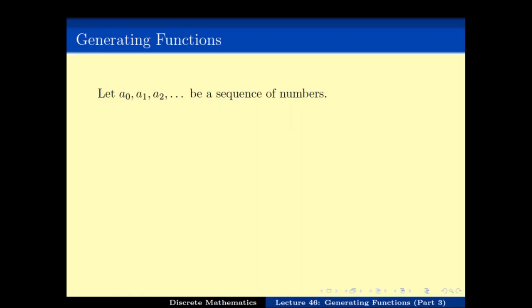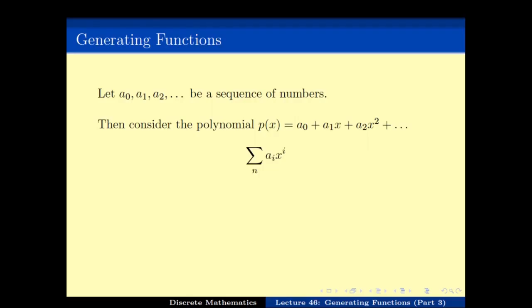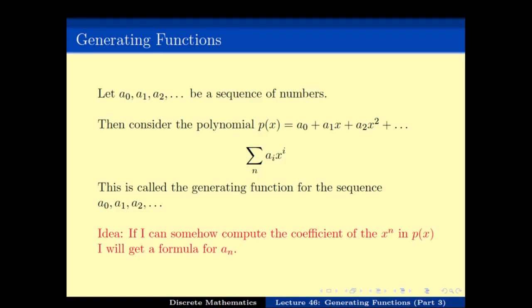To start with, we looked at a new technique called generating functions. The main idea is that if you have a sequence of numbers a0, a1, ..., a-infinity, you first represent this sequence as a polynomial — an infinite polynomial which we sometimes call a power series — where P(x) = a0 + a1*x + a2*x² + ... , or in other words the summation of a_n * x^n. This is called the generating function for the sequence a0, a1, and so on. If we can compute the nth coefficient of x^n in P(x), then we get a formula for a_n.